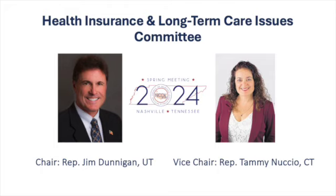Today we're going to start our discussion on the topic of state health care cost transparency requirements. In 2019, NCOIL adopted a health care cost transparency model law, which you can view in your binders on page 269. The model requires drug manufacturers, PBMs, and health insurers to report certain cost-related information to the commissioner, which is then made public on the department's website. Per NCOIL bylaws, all model laws must be readopted every five years or else they sunset. Given the importance of this topic and the constant state of change in the overall health care marketplace, we're going to use the model being up for readoption as an opportunity to discuss innovations and trends in drug pricing and health care cost transparency since 2019, to see if any changes should be considered.